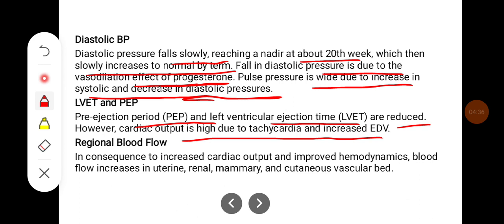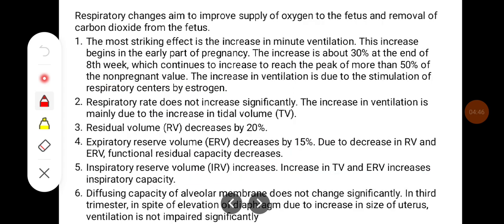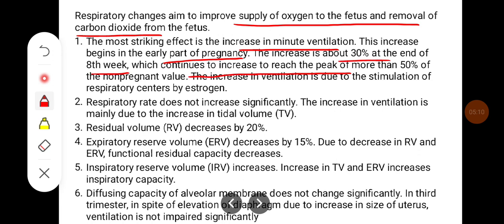As a consequence of increased cardiac output and improved hemodynamics, blood flow increases in the uterine, renal, and mammary circulations. Respiratory changes aim to improve the supply of oxygen to the fetus and removal of carbon dioxide. The most striking effect is the increase in minute ventilation, beginning in early pregnancy — about 30% at the end of the 8th week — continuing to reach a peak of more than 50% of the non-pregnant value.